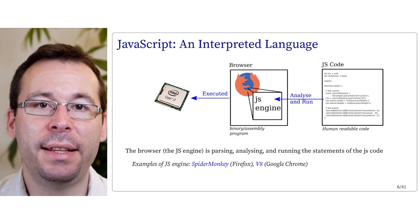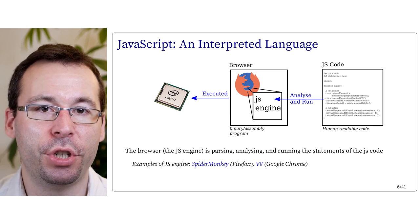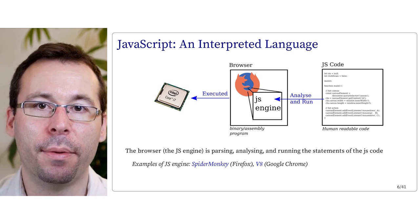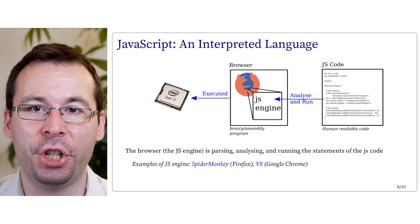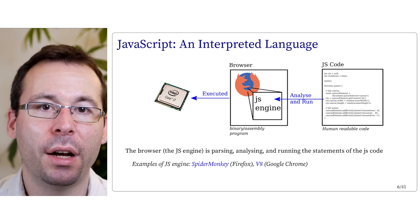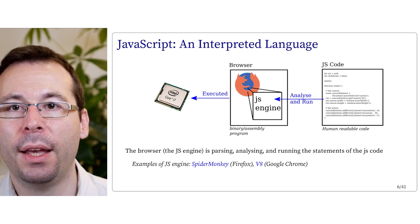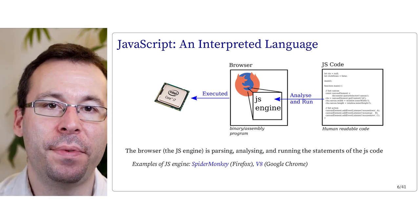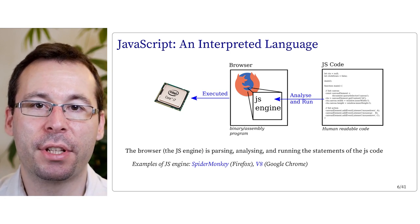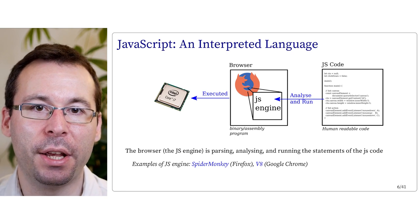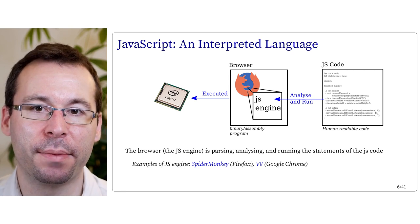JavaScript is what we call an interpreted language, which means that you have JavaScript code — basically human-readable code — and the browser, or more specifically a sub-part of the browser called the JavaScript engine, is parsing, analyzing, and running the statements of the JavaScript code. The JavaScript engine itself is a binary program executed by the processor. So at the end, the JavaScript code is not executed directly by your processor, but by the JavaScript engine, which itself executes the JavaScript code.